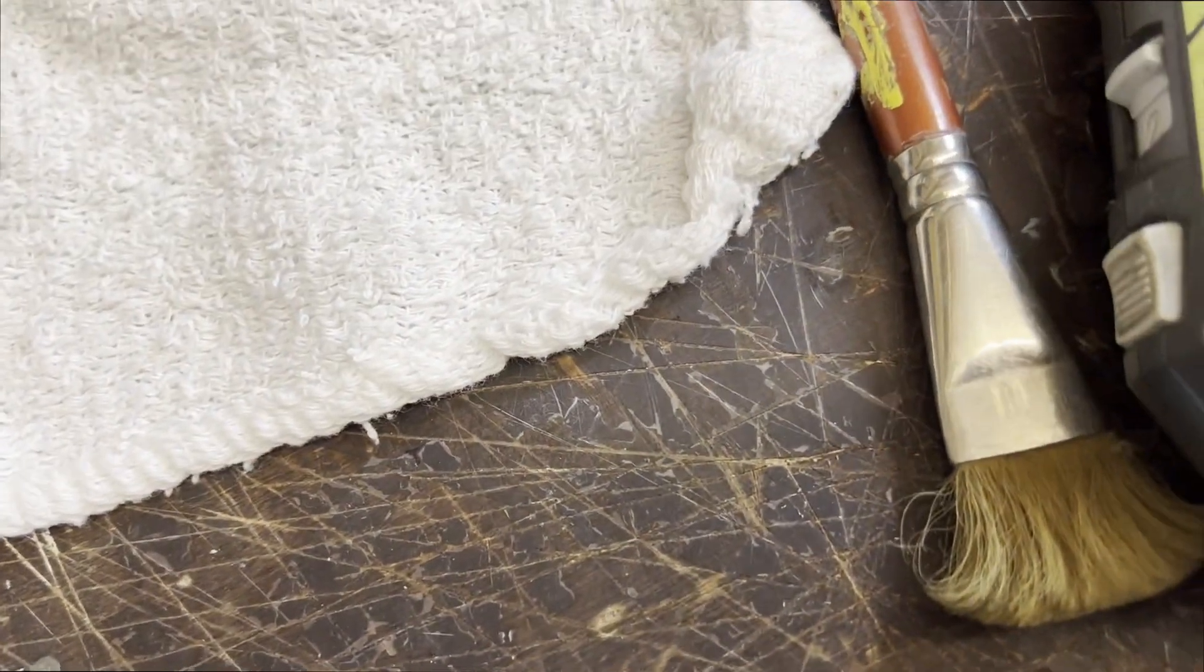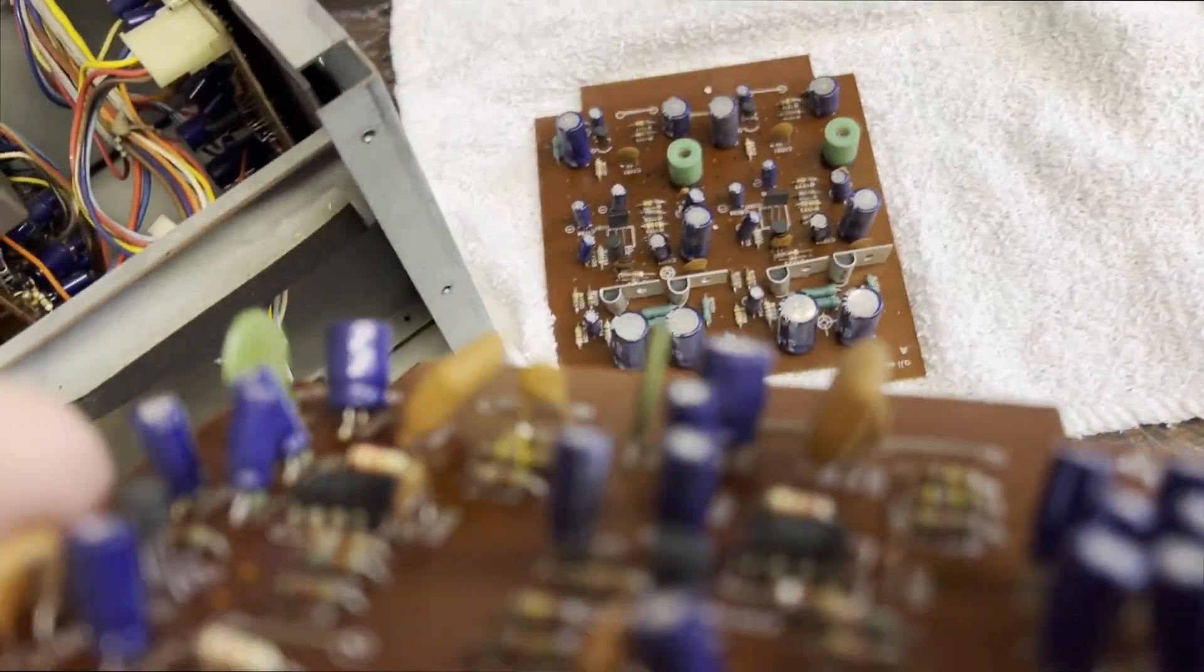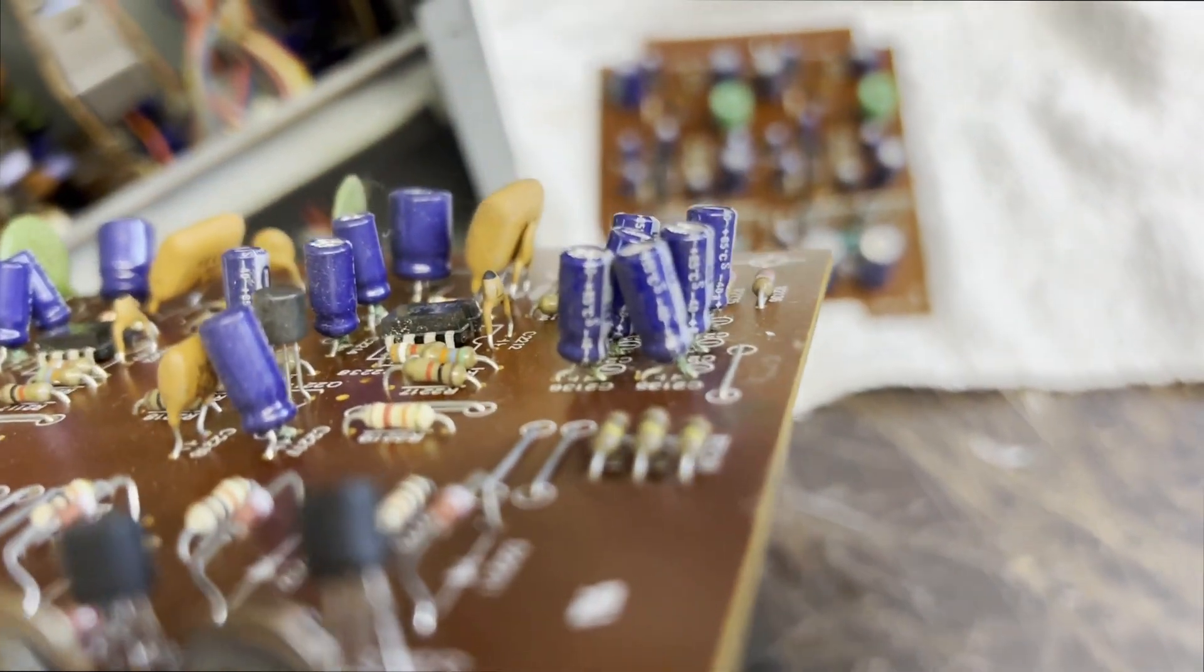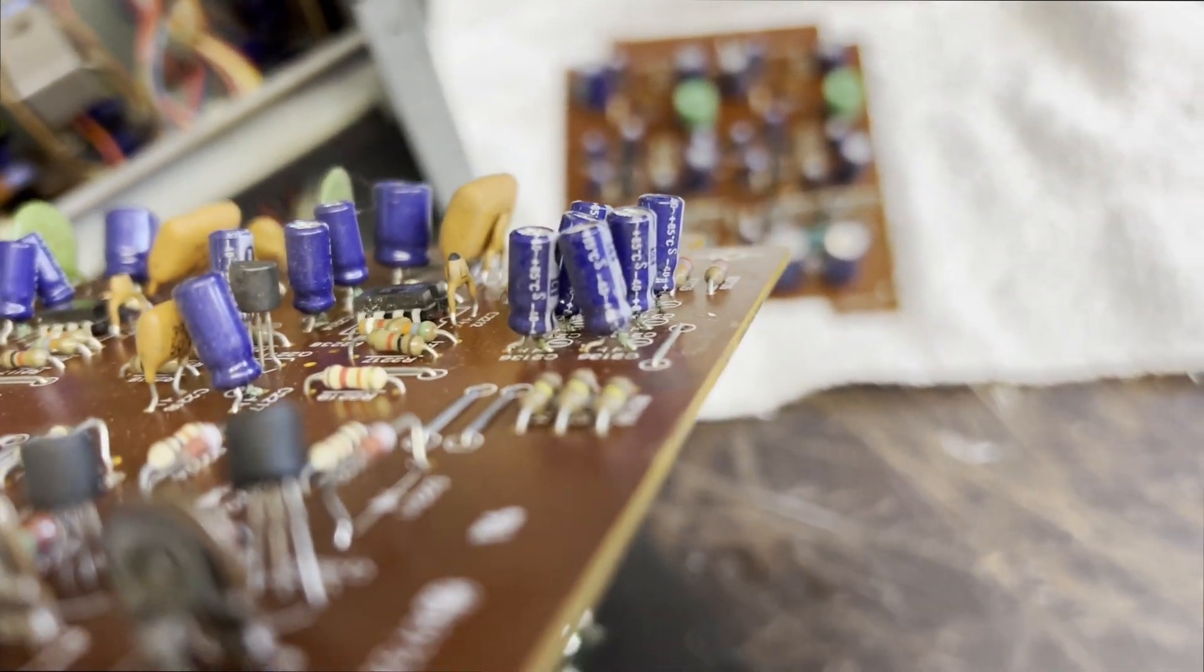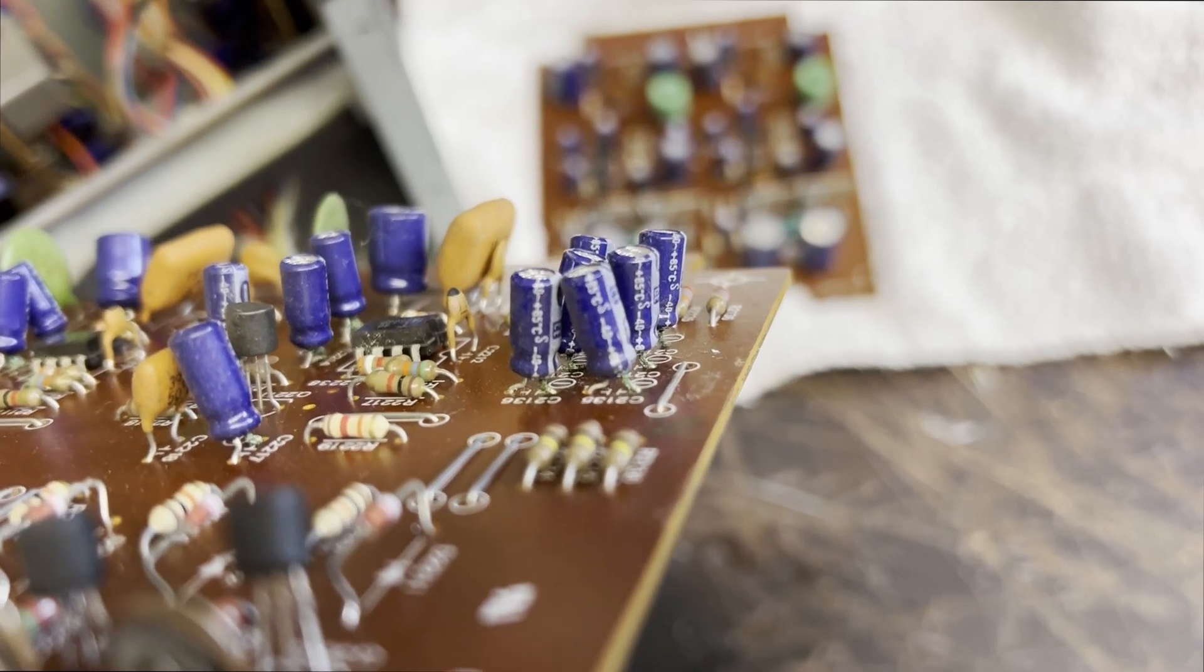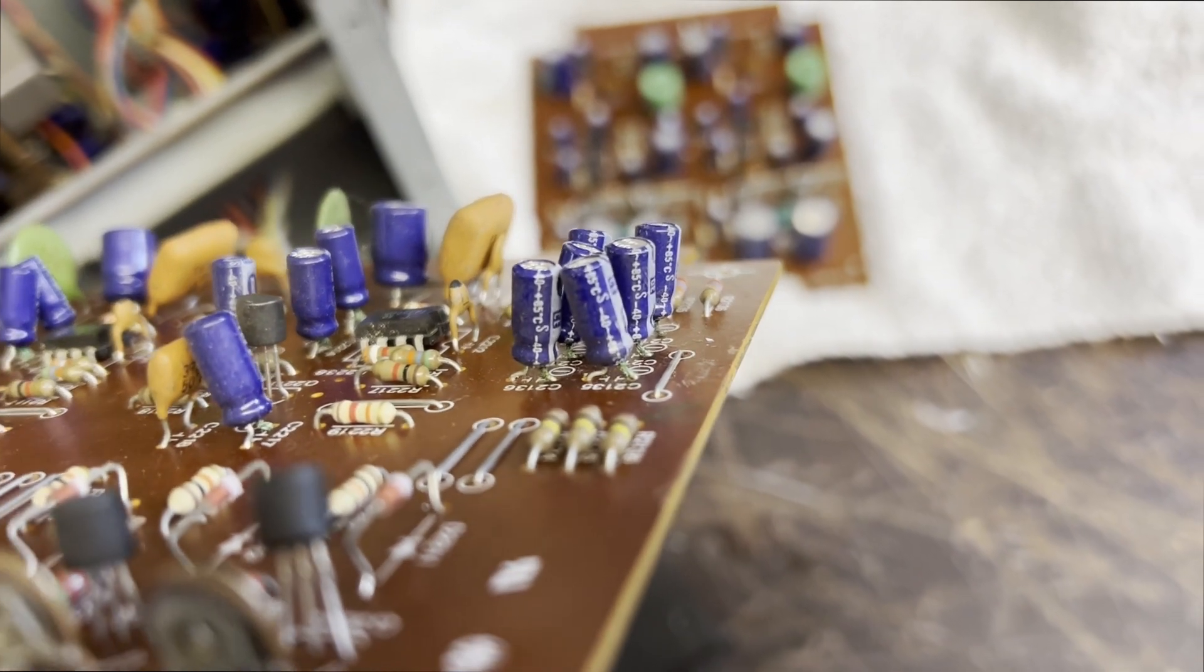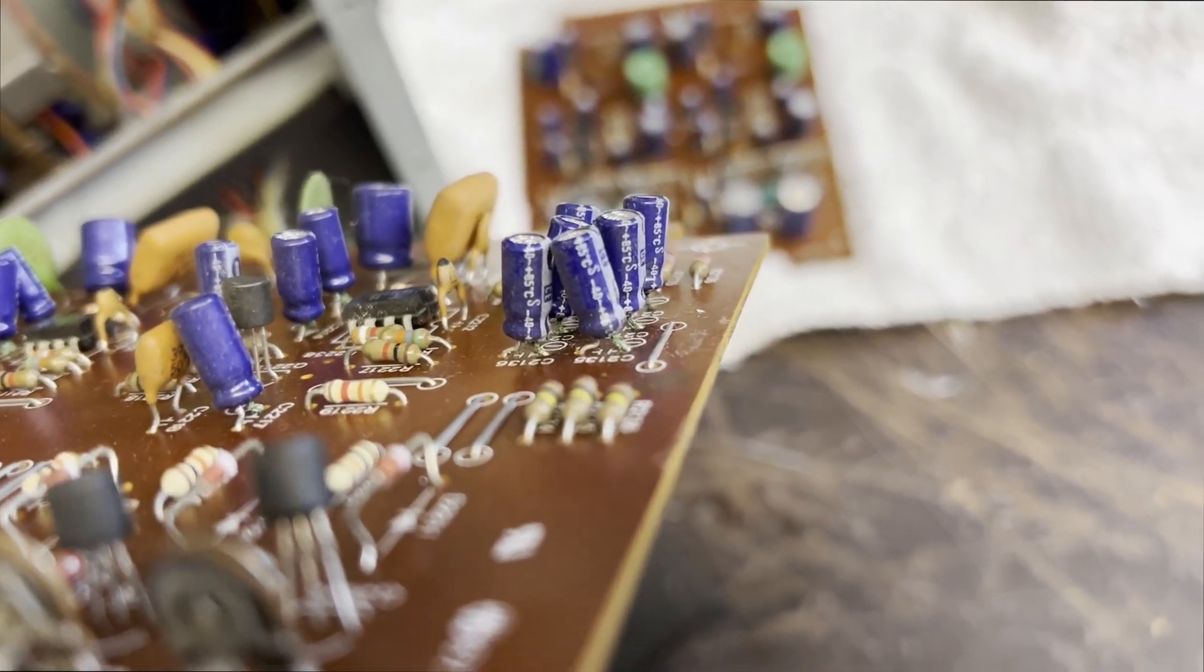Like if you look at the B board, it looks to me like it's probably going to have to be totally recapped. I mean all the caps on this B board are really rough.